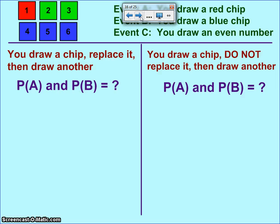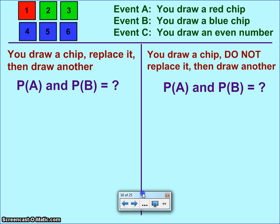Continuing on. This time, I'm giving you two different situations. These are going to involve and statements. On the left, you're going to draw a chip, replace it, and then draw a second chip. And we want to find the probability that you draw both a red chip and a blue chip on consecutive draws. On the second situation on the right, you're going to draw a chip, but you're going to toss it out. You're not going to replace it. And then you're going to draw another one out of the same bag without that original chip in there. And we still want to calculate the possibility of drawing a red chip and a blue chip on consecutive draws.